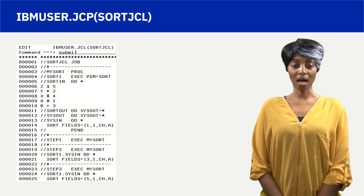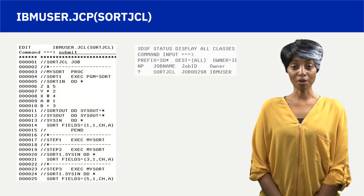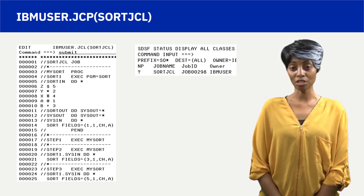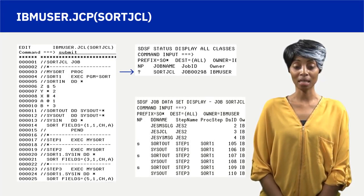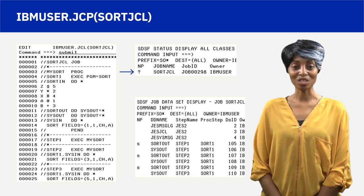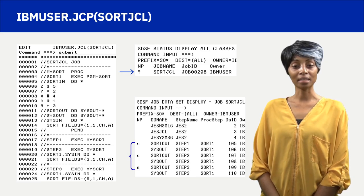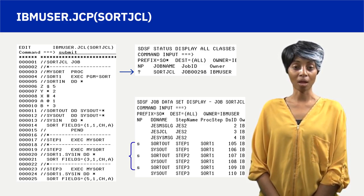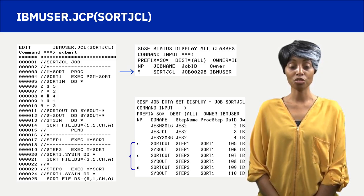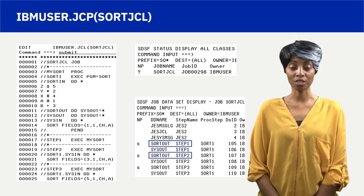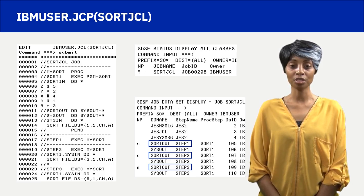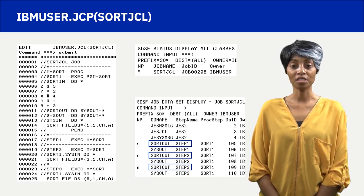The JCL shown in the left column was submitted and executed. In the right column, SDSF, which stands for System Display and Search Facility, is used to view the JCL execution output. A question mark to the left of the JCL job output displays a list of all DD names related to the job. The S command, which means select, is available to view the SORT-OUT results placed in the system JES spool. Observe the DD name column and step name columns in the SDSF display. The step name column shows SORT-OUT DD name for step one, step two, and step three — the result of three executions of the in-stream JCL procedure.